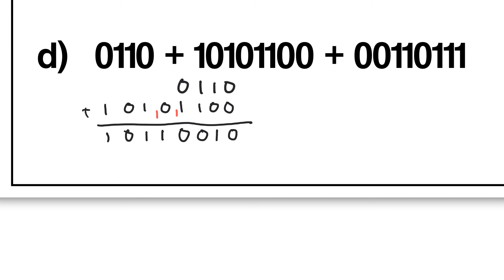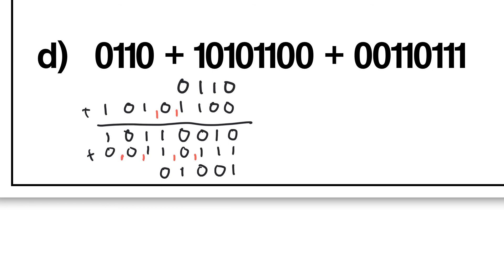Next I want to add the next number, so I'm just going to write it in to be clear about what I'm doing — I'm adding this, which was the sum of those two numbers, to this. Again, right to left. 0 and 1 is going to give me 1. 1 and 1 is going to give me 2 — I carry the 1 over here, leaving me with 0. 0 and 1 is going to give me 2 — I carry the 1 over there, leaving me with 0. 0, 0, 0, 1 is going to give me 1. 1 and 1 is going to give me 2 — I carry the 1 over here, leaving me with 0. 1 and 1 and 1 is going to give me 3 — I carry 2 over here, leaving me with 1. 0, 0, 1 is going to give me 1. And 1 and 0 is going to give me 1.